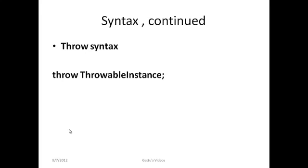Now let's go to throw. Throw is another keyword Java provides. If we want to explicitly throw our own exception, we use throw. The syntax is: throw throwable_instance — the throwable instance is the exception object created. The exception object is created at the error line and thrown to the catch handler. So it is possible for the user to throw an exception explicitly using the throw keyword to explicitly throw an error.